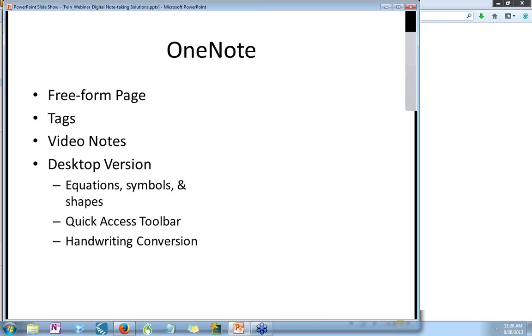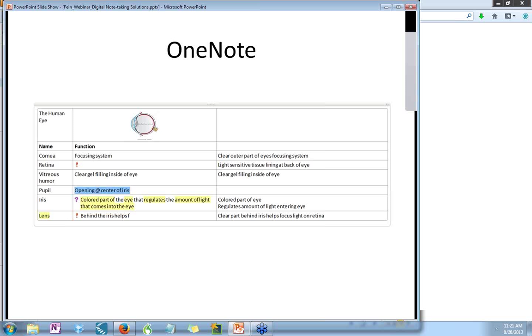In OneNote, we have several key features to consider. There's the free form page, which enables you to create a two-column note format, a classic approach to differentiating main ideas from supporting details. Another feature of OneNote is the extensive range of tagging options. Tagging is a way to include an icon and is a valuable way to designate questions, areas of confusion, and important information. Another benefit of OneNote is the option for creating a video note. Notable for the desktop version of OneNote are the options for inserting equations, symbols, and shapes, and the handwriting recognition feature available with tablet PC.